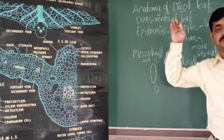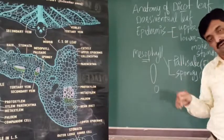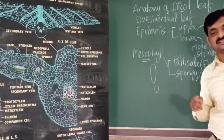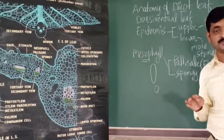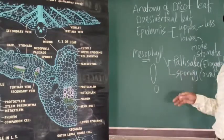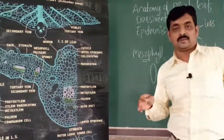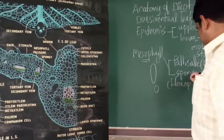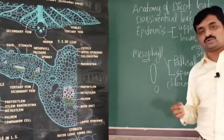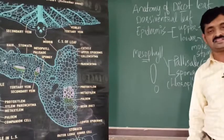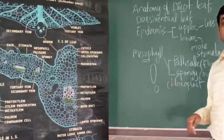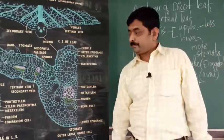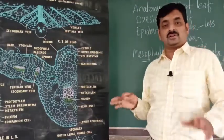Palisade cells are present below the upper epidermis; spongy cells are present below the palisade cells or near the lower epidermis. Both palisade and spongy cells are modified parenchyma cells and they contain chloroplasts. The cells are green because of the chloroplasts, which contain a green pigment called chlorophyll.